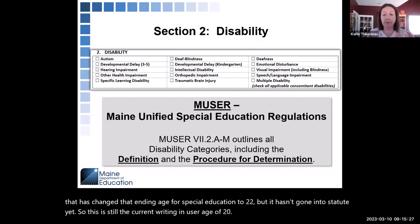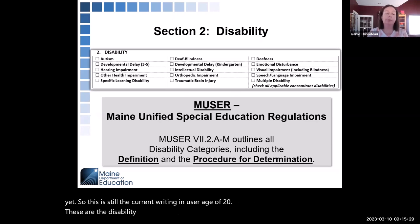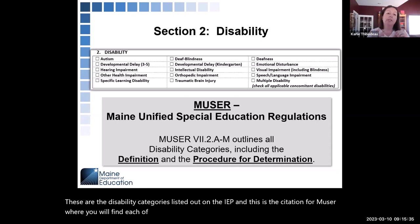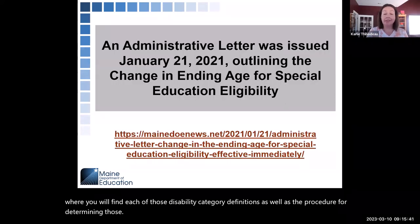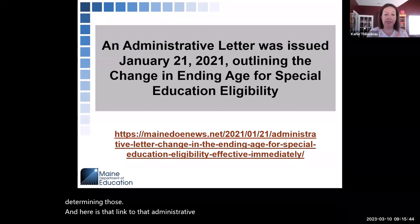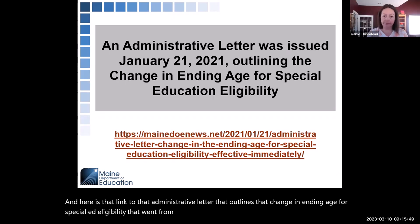These are the disability categories listed on the IEP, with the MUSER citation where you'll find each category's definition and the procedure for determining them. Here is also the link to that administrative letter that outlines the change in ending age for special ed eligibility from age 20 to age 22.